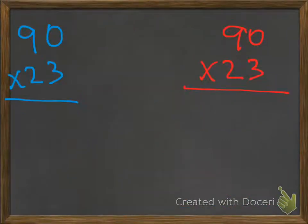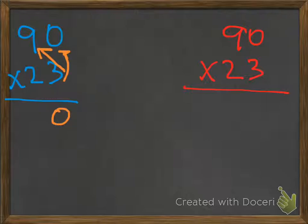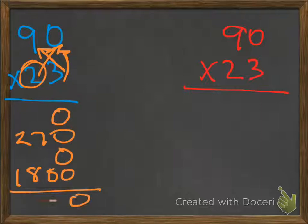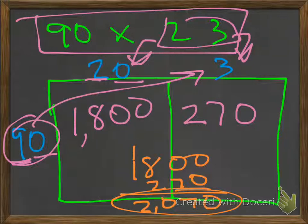We could try it a couple of other ways too. We can do partial products: 3 times 0 is 0, and then 3 times 90 is 270. And then if we take 20 — this 2 is not a 2, it's a 20 — 20 times 0 we get 0, and then 20 times 90. We add it up and we get 2,070, just like what we got right here.